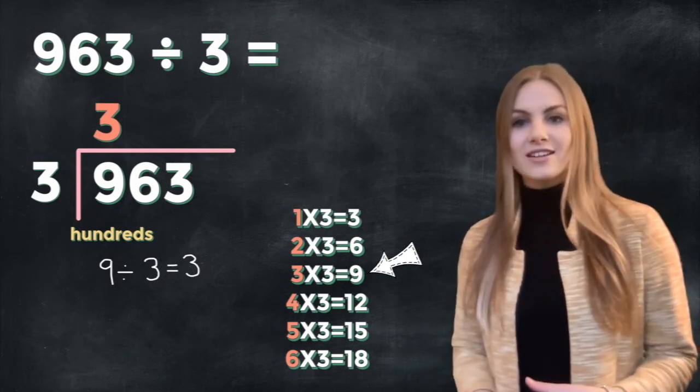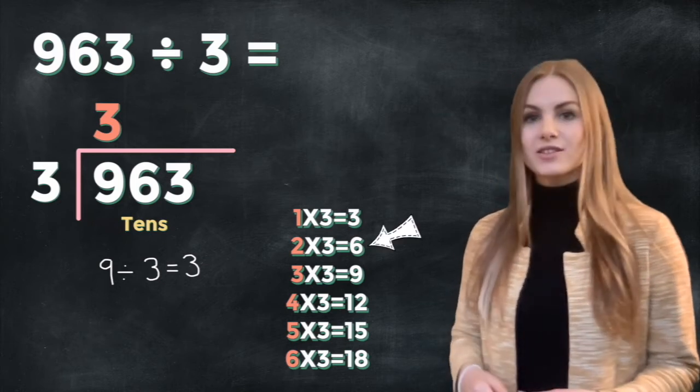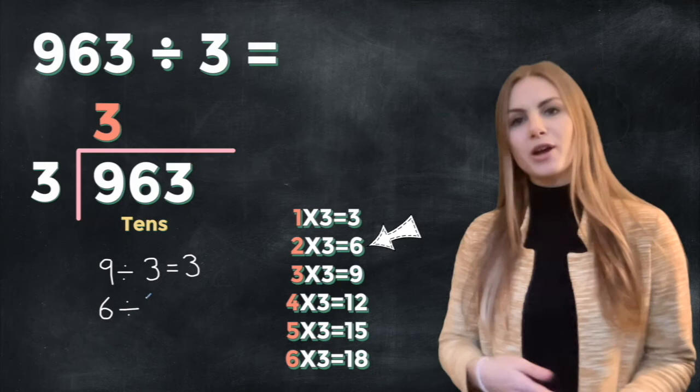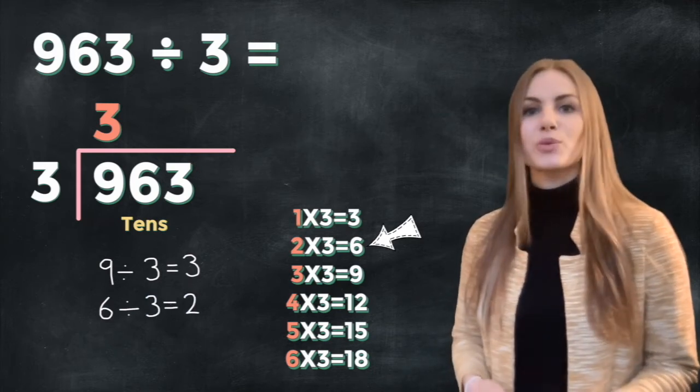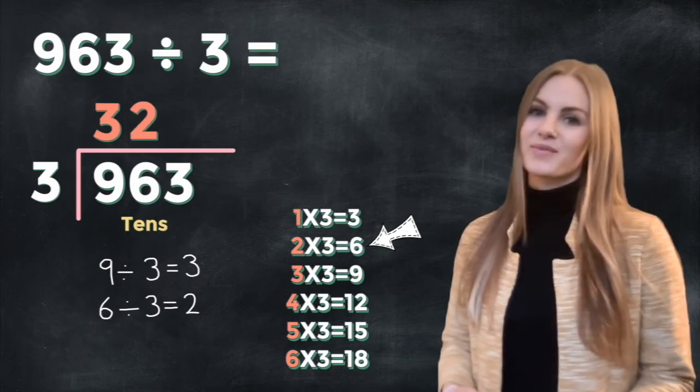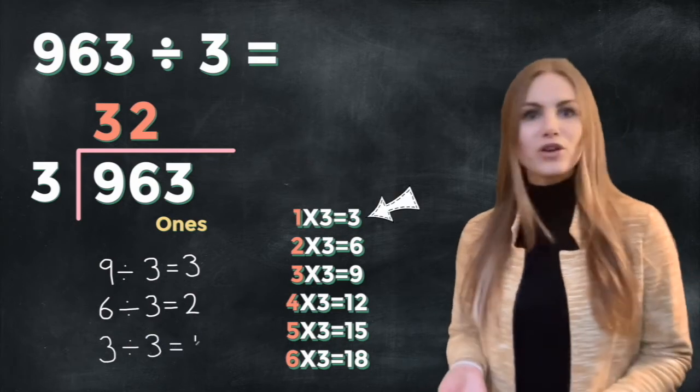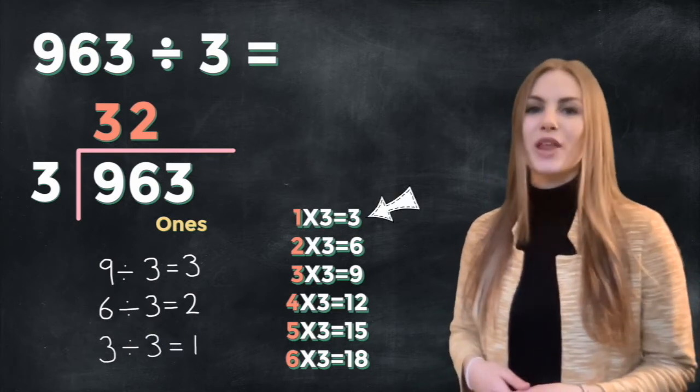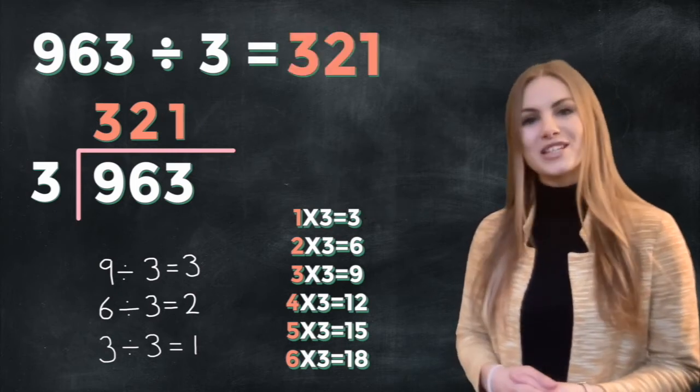Now we move on to the tens. How many times does 3 go into 6, or what is 6 divided by 3? 6 divided by 3 is 2. So we're going to put that 2 into our tens column. Finally we move on to the ones. How many times does 3 go into 3? Well it only goes in once. So we're going to put that 1 in the ones column. So now we've got our answer, 321.